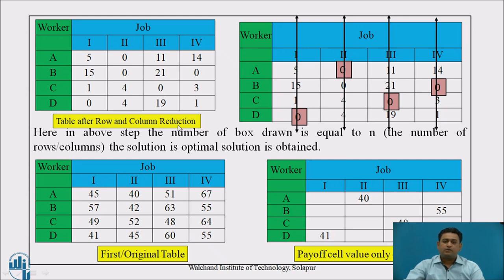Columns 2, 3, and 4 are now hidden; only column 1 remains. In column 1, the values are 5, 15, 1, 0 — worker D has a zero at the last row, which is bracketed and hidden. The resulting table shows 4 zeros marked by boxes. As per the Hungarian method rule, when the number of boxed zeros equals n (the number of rows or columns), the optimal solution has been obtained.